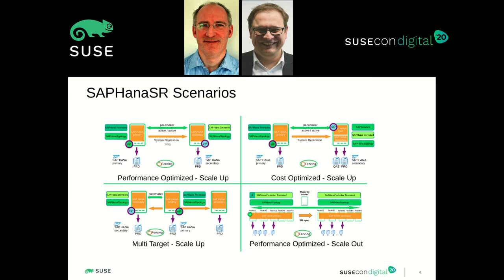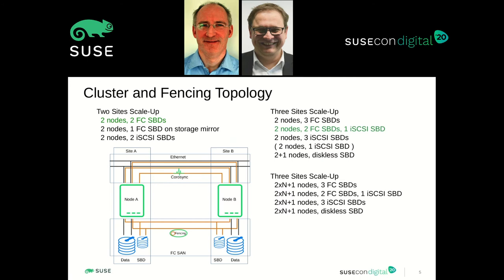SUSE has defined a set of setups that are known to work. These use cases or scenarios are described on our website with documentation. There are some more scenarios, but as a rule of thumb, you should follow the documented setups and then it will basically work. The most common setup uses two sites — sometimes two data centers or two availability zones in the cloud — and sometimes a third site. In general, the application is always clustered across two sites, and in that case we can have two or sometimes three SBD devices, which Thomas will show later on.